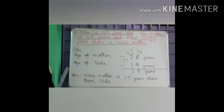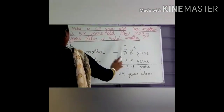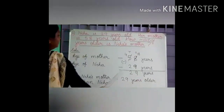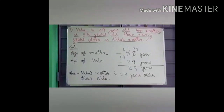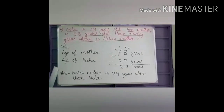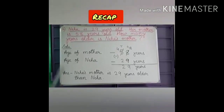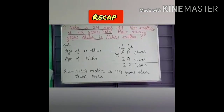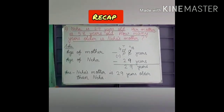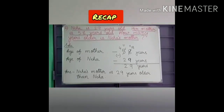So you have to read the word problem again and again and understand what is given and what is asked. Today in this class I have discussed two word problems which are quite different from the previous ones. Here you have to read the question again and again and understand whether it is addition or subtraction. By seeing one word, never judge your word problem — you have to read it, understand the meaning, and then do it.